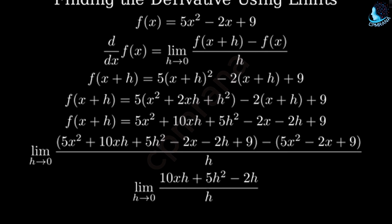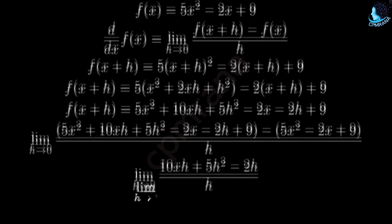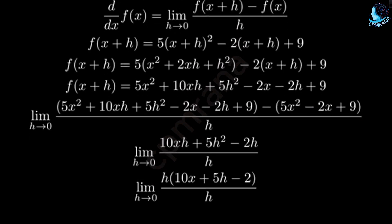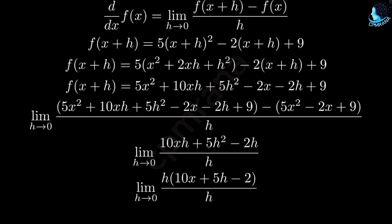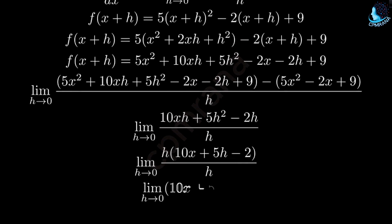Next, we can factor out h from the numerator. This gives us h times quantity 10x plus 5h minus 2, all divided by h. The h's cancel out in the fraction.